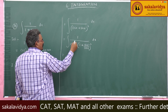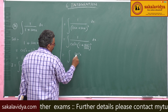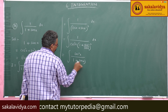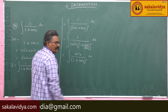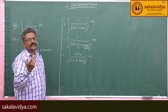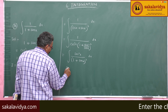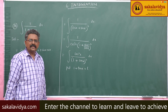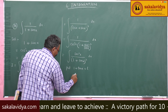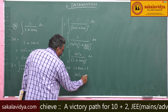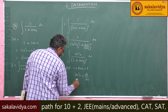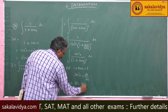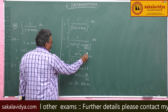Now, 1 by cos square x is secant square x. So this becomes integral of secant square x by 1 plus tan x whole square dx. Now, secant square x is the derivative of 1 plus tan x. So put 1 plus tan x equal to t. We get secant square x equal to dt by dx. Therefore dt equals secant square x dx.